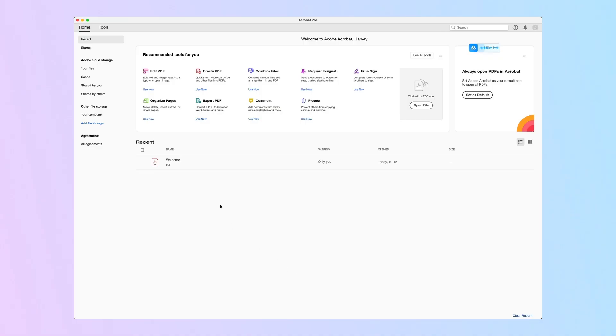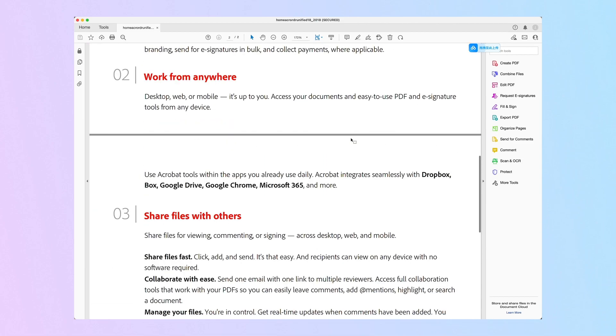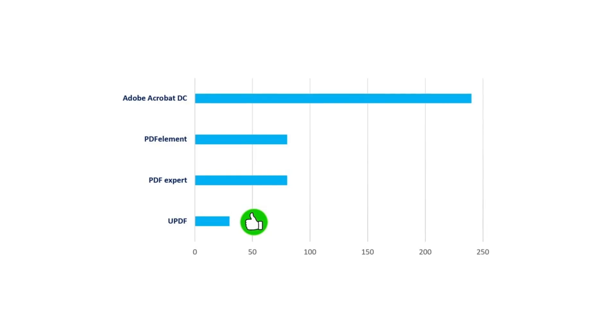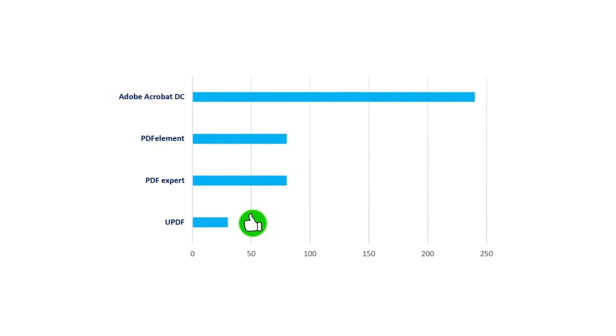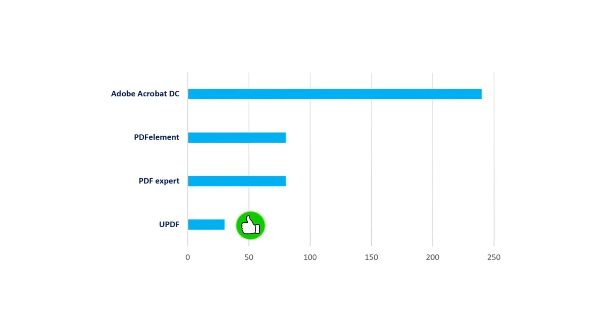First off, let's look at the basics. Adobe Acrobat has been a market leader for over a decade, offering professional PDF editing features. But with great power comes, well, a hefty price tag. Adobe Acrobat Pro will cost you around $239.88 per year.